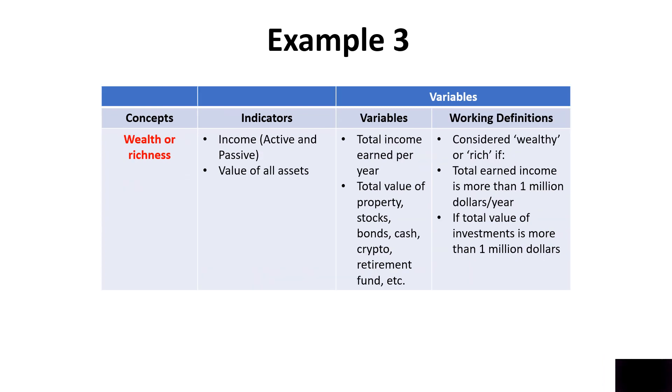Let's take the last example or third example. Here, I am trying to measure how rich or how wealthy a particular community is. The indicator of that would be the income of a person or income of a group of people. Let's say that I live in a particular suburb, the wealthy suburb, and there are 100 people living there. I want to get an indication of how wealthy or how rich they are. The indicator would be their income. That would include all the active income or passive income. Active income means income that they are earning directly through either a job or a business. Passive income would be the income that they are earning through their various investments. I might also look at the value of all assets: rental properties, boats, stocks, cash, cryptocurrency, retirement fund, whatever.